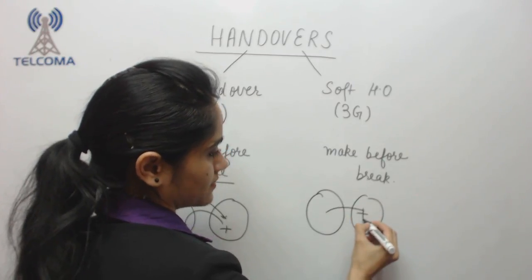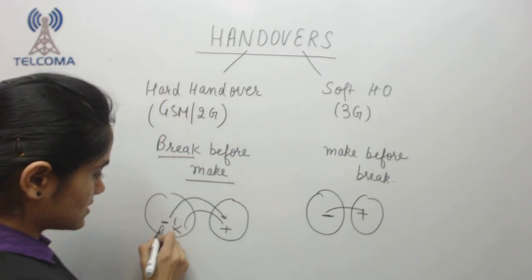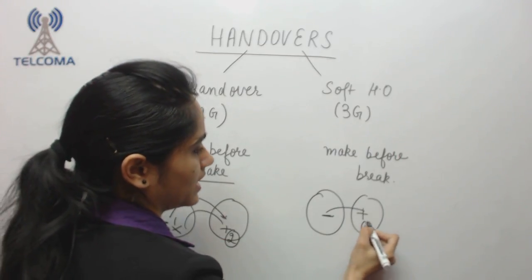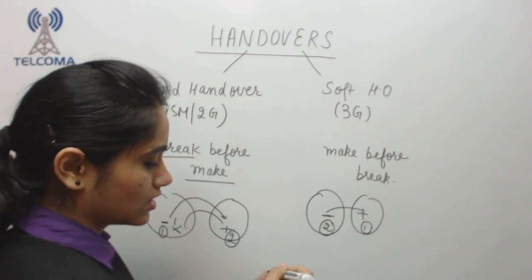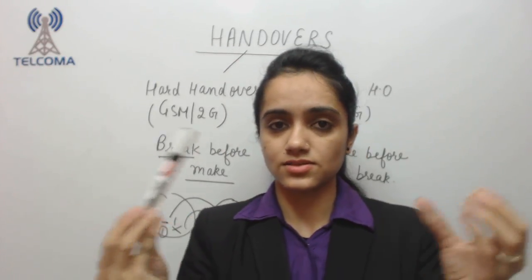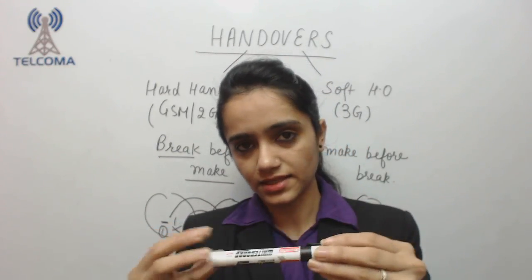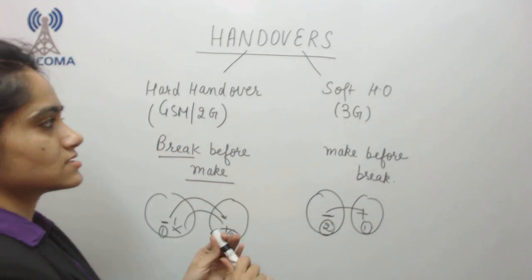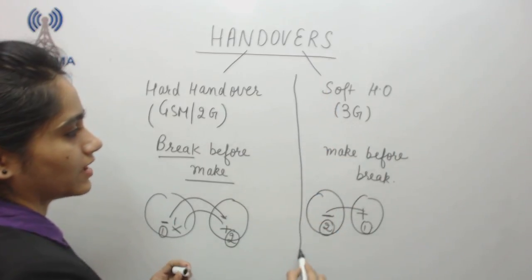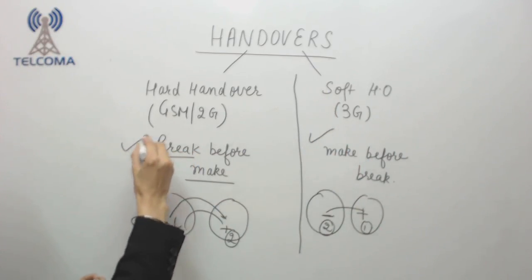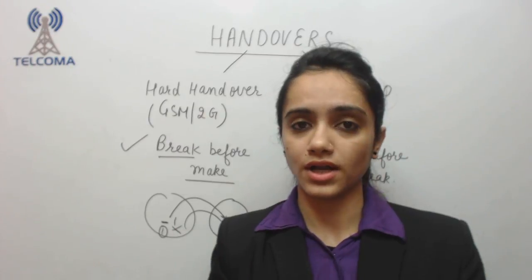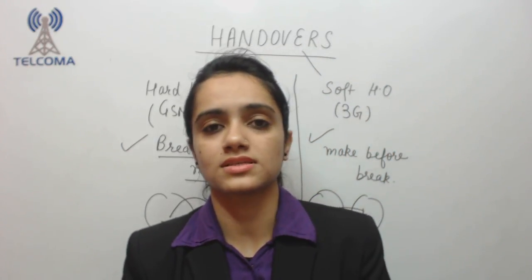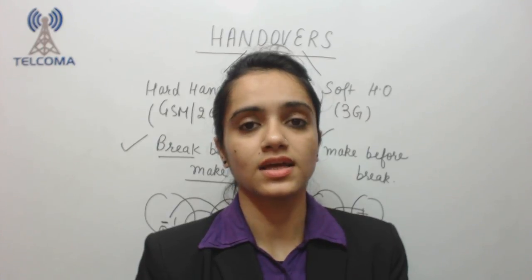In soft handover, which is make-before-break used in 3G, the UE makes the connection with the new cell first and then releases the old one. So the new connection is established before the old one is released — make before break. Handovers are required for seamless and continuous mobility, and this handover process enables that.